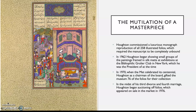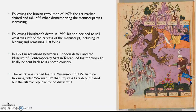This was all in the midst of Houghton finalizing his third divorce and his fourth marriage, when he started auctioning off books and other manuscripts. By 1976, individual folios of the Shahnama of Shah Tahmasp began appearing on sale in the market. The most famous of all the folios, the Court of Gayumars, was acquired by Prince Sadruddin Aga Khan and still remains in the Aga Khan Museum today. Following the Iranian Revolution of 1979, the art market changed and talk of further dismembering the manuscript increased.